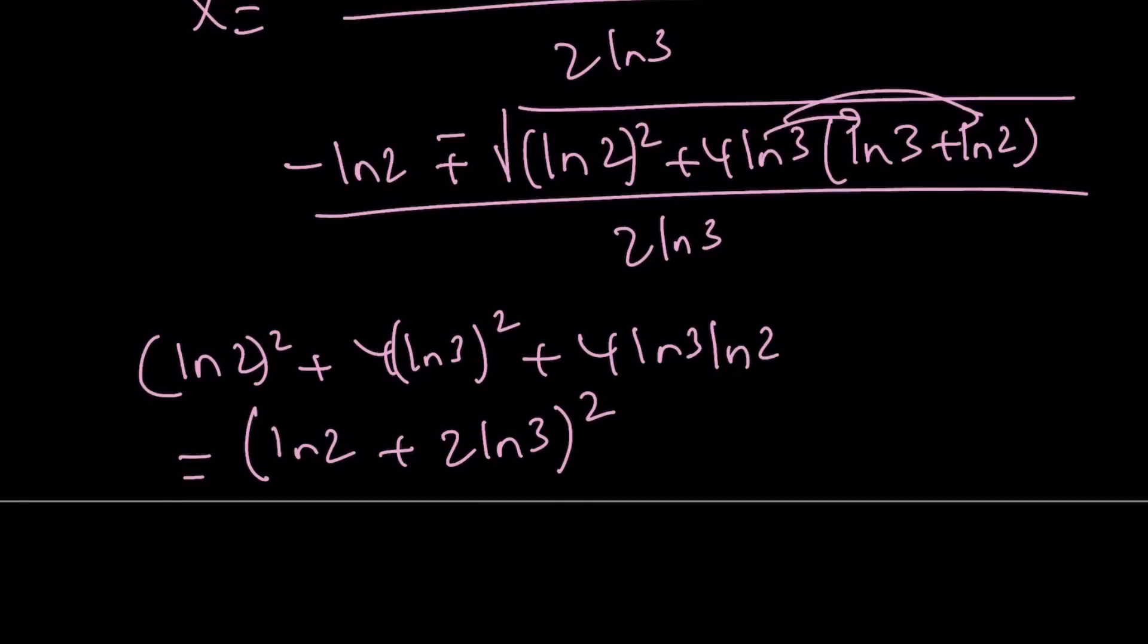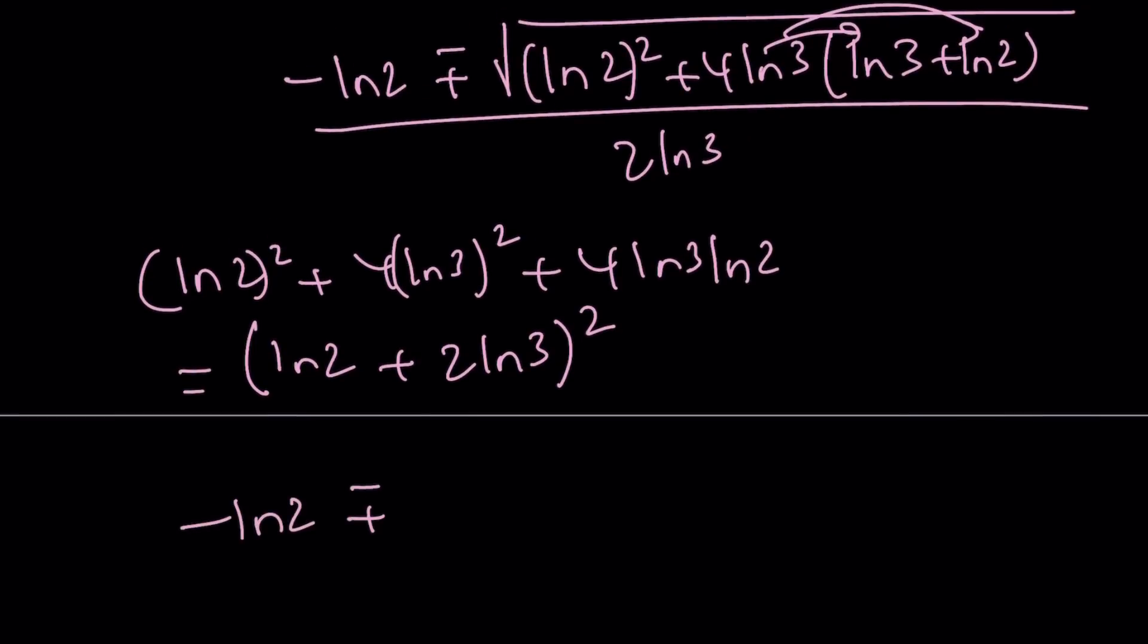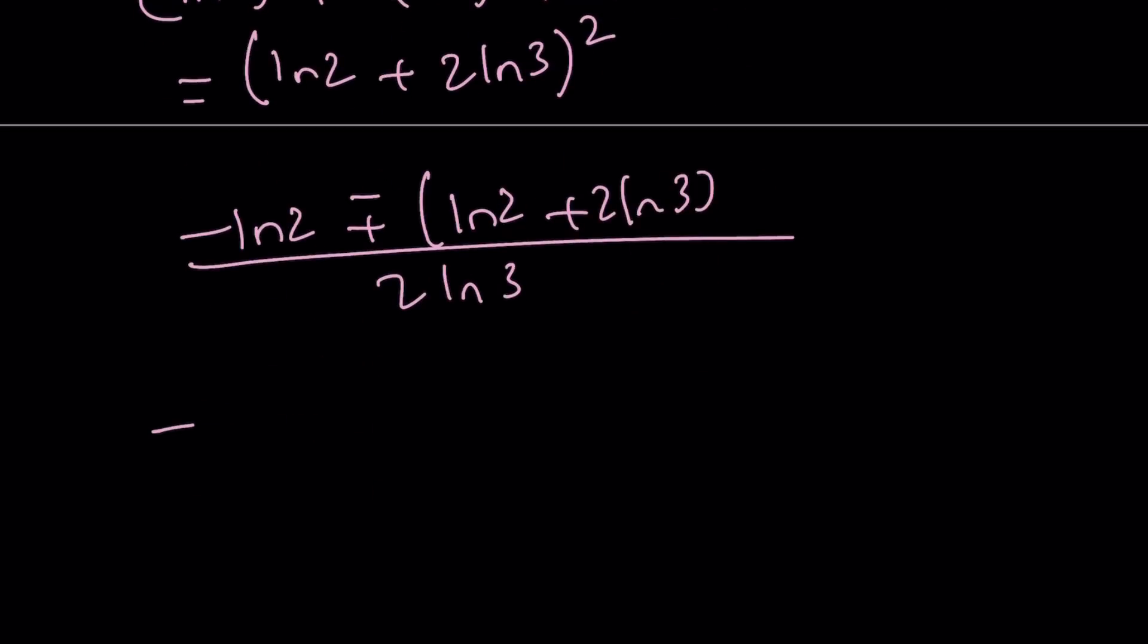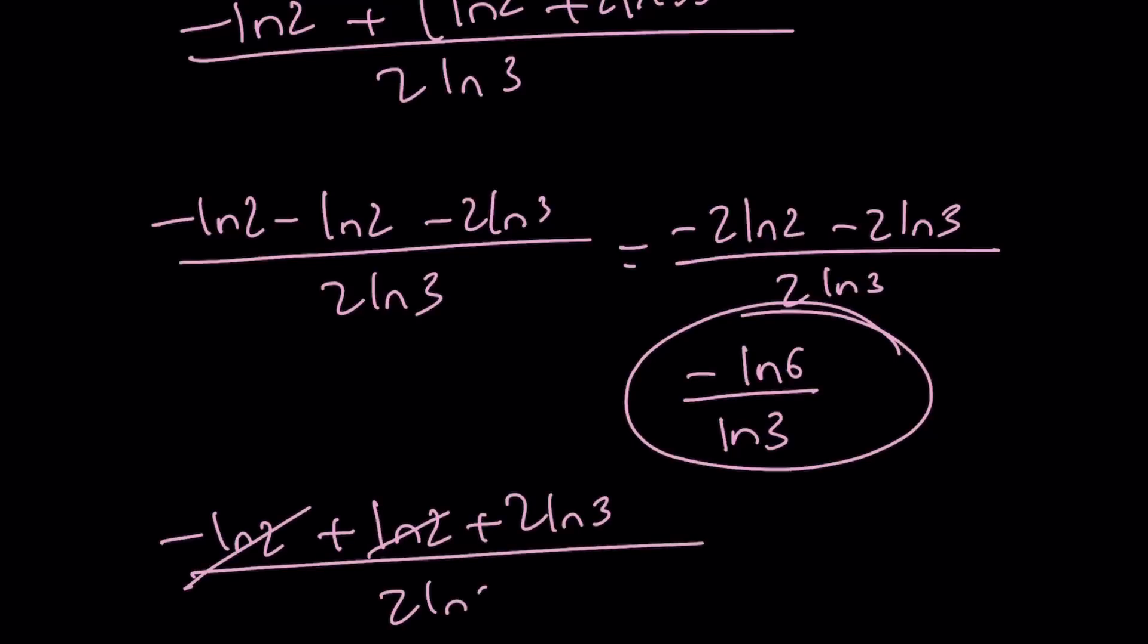We're going to square root it, so we get the plus minus sign. The square root is going to cancel out the square. We get negative ln 2 plus minus (ln 2 plus 2 ln 3) divided by 2 ln 3. We split up from here. We can write negative ln 2 minus ln 2 minus 2 ln 3 divided by 2 ln 3. This gives us negative 2 ln 2 minus 2 ln 3 over 2 ln 3. Divide everything by 2, you get negative ln 2 plus ln 3, which can be written as negative ln 6, and the bottom is just ln 3. If you use the plus sign, ln 2 and negative ln 2 cancel out, and 2 ln 3 divided by 2 ln 3 is 1. Those are the solutions as before.